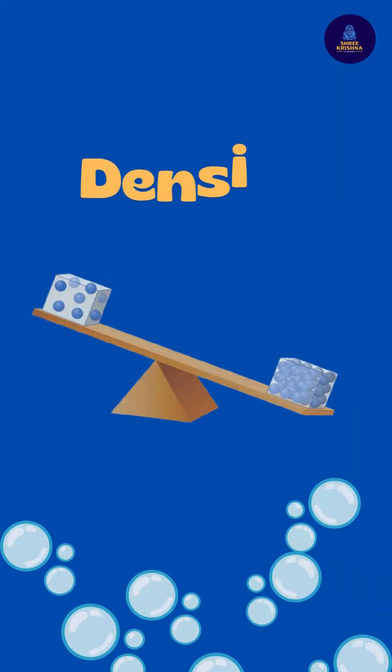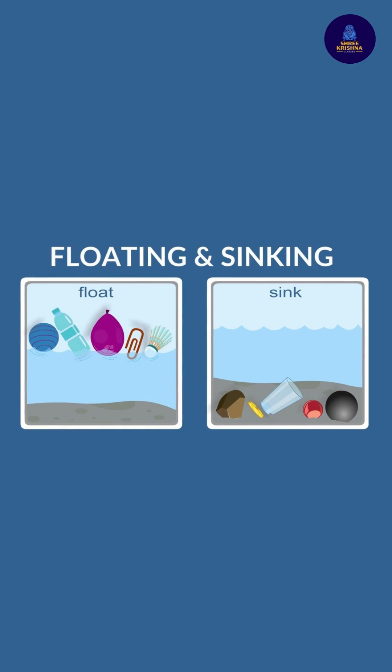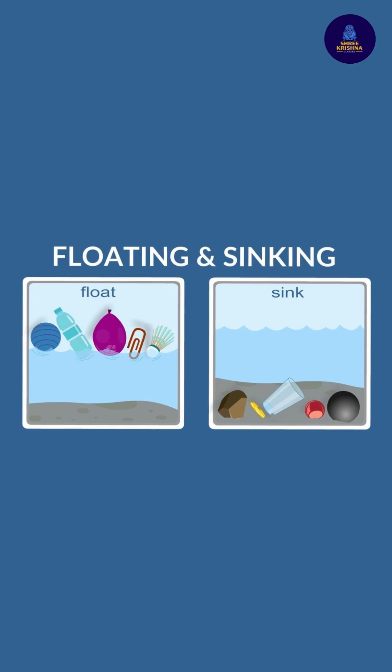So coming to the first factor: density. Density simply means how tightly packed a particular material is. If the density of the object is greater than the density of the fluid, it will sink. If the density of the material is lower than the density of the fluid, it will float.